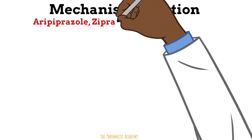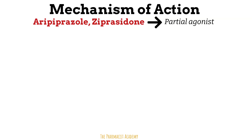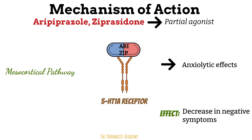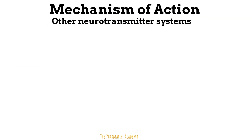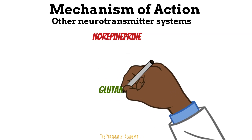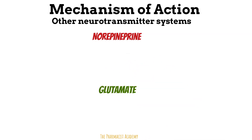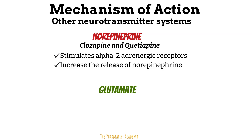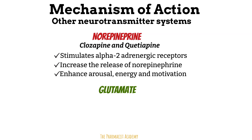Agents like aripiprazole and ziprasidone are partial agonists at the 5-HT1A receptor in the mesocortical pathway. These receptors are involved in regulating mood, anxiety, and emotional responses. Partial agonism at these receptors can lead to anxiolytic effects, which may help with the negative emotional symptoms of schizophrenia such as depression, anhedonia, and social withdrawal. Additionally, neurotransmitters like norepinephrine and glutamate are involved in the mechanism of the second generation antipsychotics.